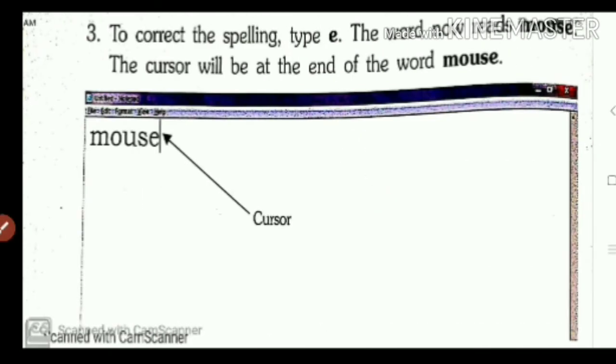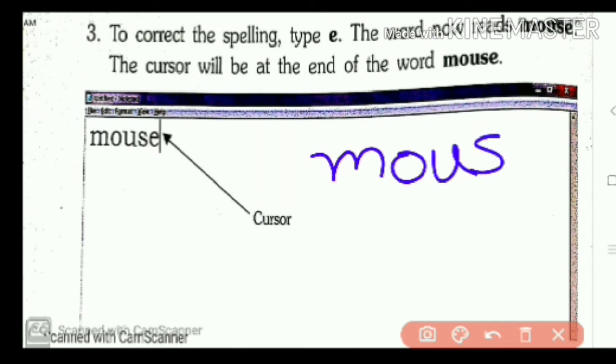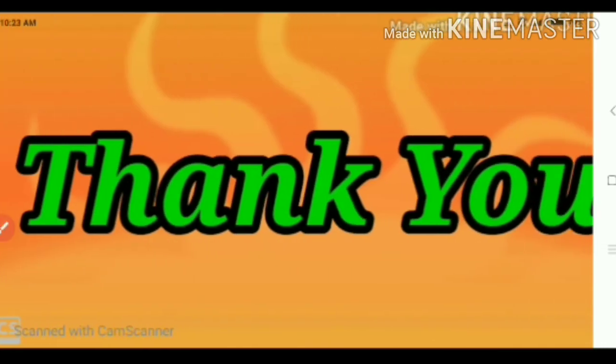Now, third step. To correct the spelling, type E. The word now reads mouse. The cursor will be at the end of the word mouse. Now, we erased W. Then it was empty. Now, we type E. Then the full spelling is M-O-U-S-E. Mouse.